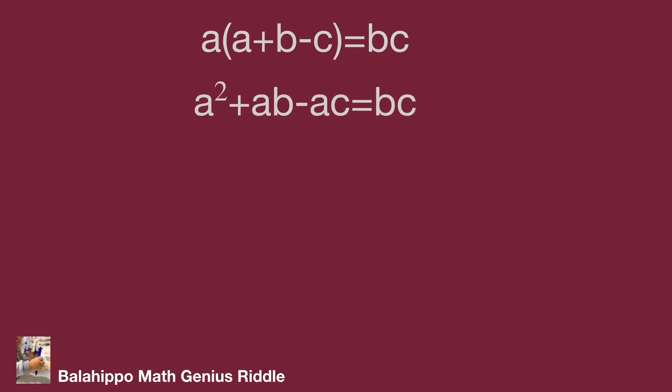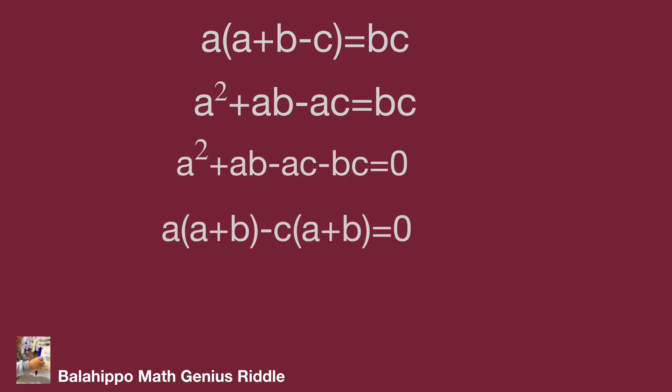Multiplying the items on the left side and moving bc from the right to the left, the equation becomes a squared plus ab minus ac minus bc equal to 0. In this equation, we find the factor a plus b. Adjusting these terms, we get the quantity (a plus b) multiplied by quantity (a minus c) equal to 0.